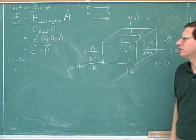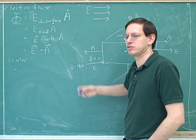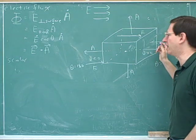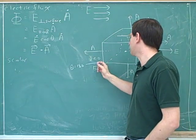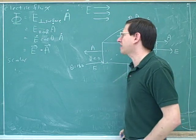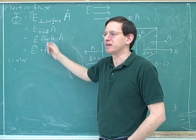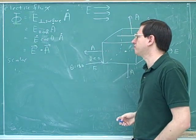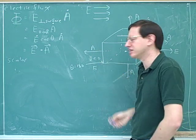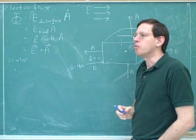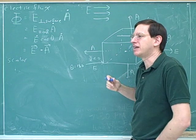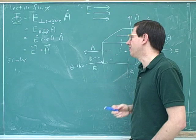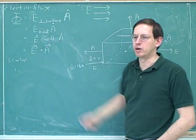That said, there's a much easier way to get the sign of the flux using common sense. We can see that the electric field is exiting the cube on the right, so the flux is positive; it's entering on the left, so it's negative. I would use the cosine formula only as a backup, because it's easy to make mistakes focusing on the angle. When an electric field exits a surface, that's positive flux; when it enters, that's negative flux.